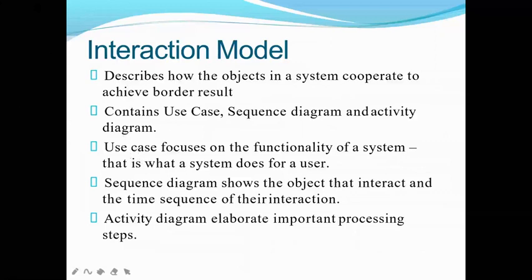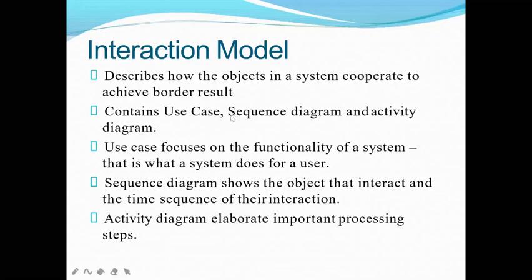In your use case, it will contain all the functionality of the system. Whatever the functions are there — like the students want to run, they want to walk — all these things you can take as your methods or functions. The use case normally focuses on how many students can run well, how many students can walk well, how many students can do cycling well. All these things are your methods or functions. From your 3D class, when you take the individual students' use case — like a particular thing such as walk, run, cycling, or bike riding — you are focusing on individual things. That is known as your use case. The sequence diagram will show the objects that interact and the time sequence of their interactions — how much time it is taking to interact and what is happening at that time.